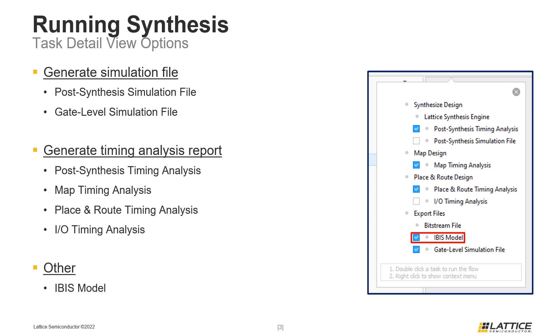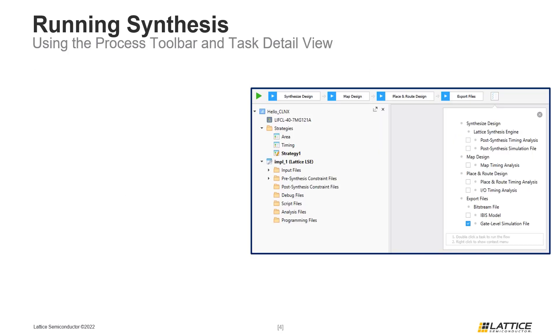Now that we've introduced the different types of options in Radiant's task detail view, we are going to briefly discuss how synthesis can be run. There are three ways synthesis can be run.